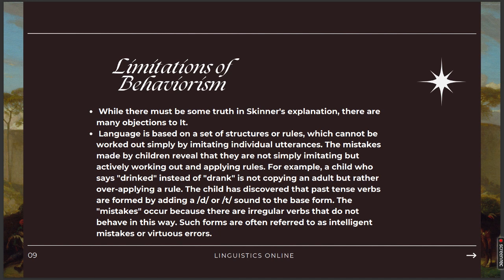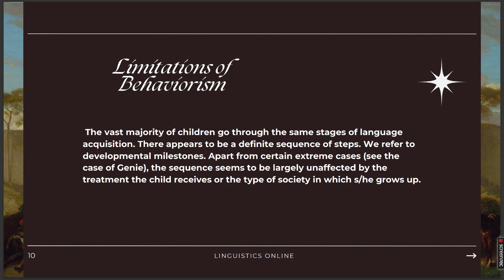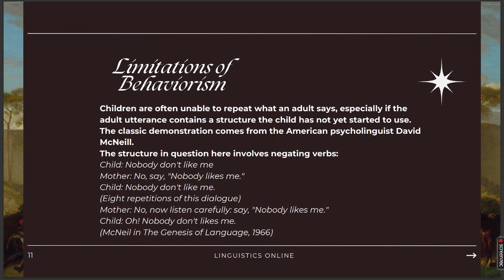The vast majority of children go through the same stages of language acquisition. There appears to be a definite sequence of steps — we refer to developmental milestones. Apart from certain extreme cases, the sequence seems to be largely unaffected by the treatment the child receives or the type of society in which she or he grows up. Children are often unable to repeat what an adult says, especially if the adult utterance contains a structure the child has not yet started to use.